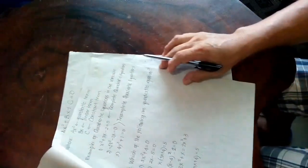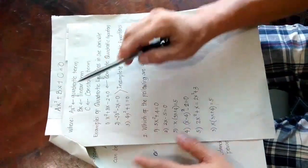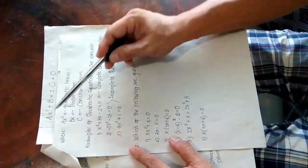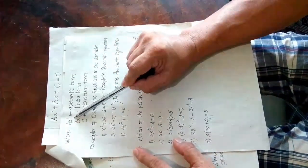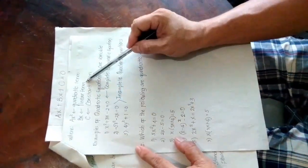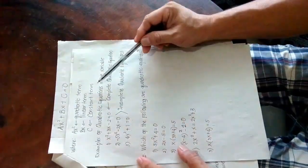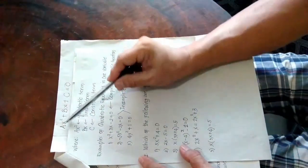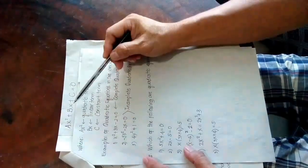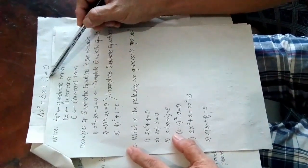Let's identify the terms. In the standard form Ax squared plus Bx plus C equals 0: Ax squared is the first term, known as the quadratic term because the exponent is 2. Bx is the second term, known as the linear term because the exponent of x is 1. C is the third term, known as the constant term, which is simply a number.